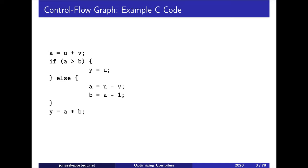After that it will create a directed graph where the nodes are parts of the code without branches — there may be a branch at the end, but no branch into the middle of a node.